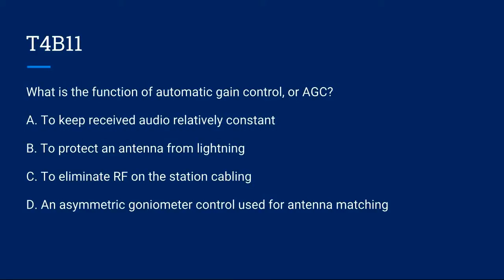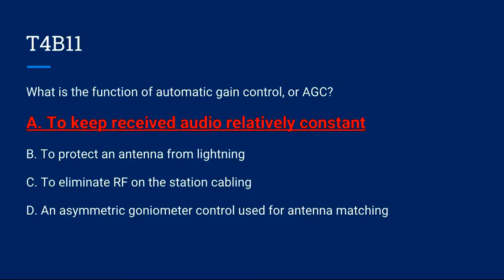What is the function of automatic gain control, or AGC? A. To keep received audio relatively constant. B. To protect an antenna from lightning. C. To eliminate RF on the station cabling. D. An asymmetric goniometer control used for antenna matching. Correct answer is A. To keep received audio relatively constant.